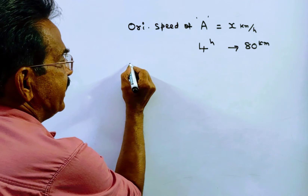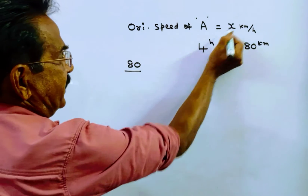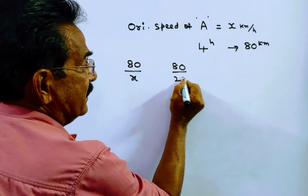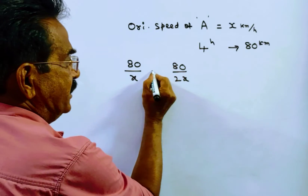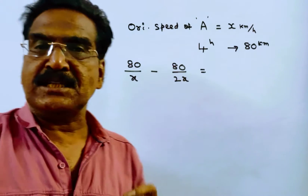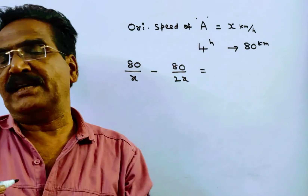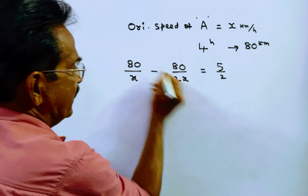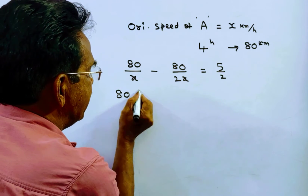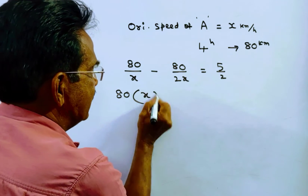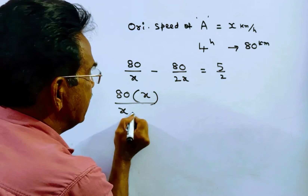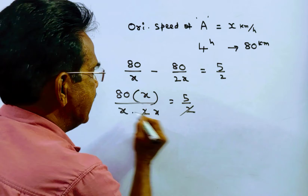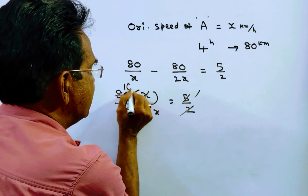So now the equation is: to travel 80 kilometers with normal speed minus to travel 80 kilometers with double speed, the difference between these two is 4 minus 1 and a half, which is 2 and a half, that is 5 by 2 hours. So 80 into (2x minus x) upon x into 2x is equal to 5 by 2. The 2 gets cancelled, x gets cancelled, giving 5 sixteenths.